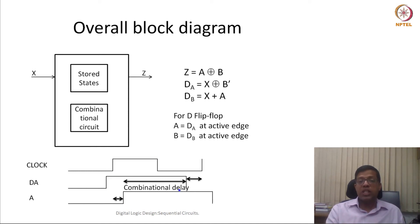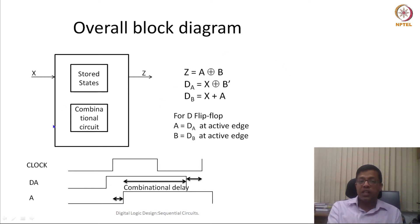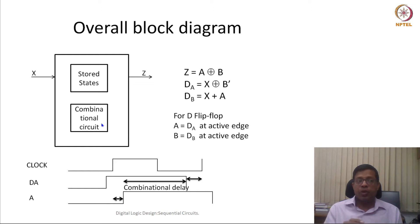Also, the output must settle down before the hold time of the register. The combinational delay starts only after the propagation delay of the flip flop. So all three — worst-case combinational delay, setup time, and hold time — will determine our clock period.